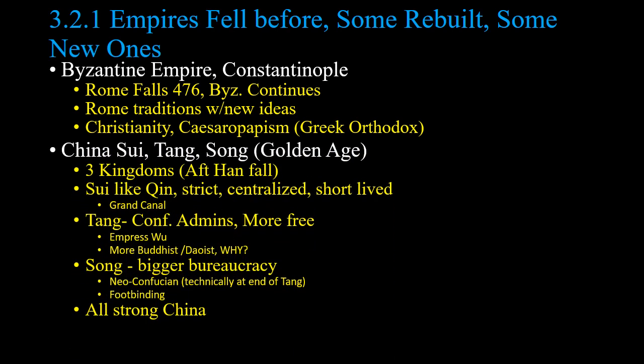China also rebuilds. After the Han Dynasty falls, you get smaller dynasties and the Three Kingdoms, then the Sui and Tang Dynasties take over. The Sui, like the Qin, are strict and short-lived but do grand infrastructure with the Grand Canal. The Tang Dynasty brings back Confucianism, especially Neo-Confucianism toward the end and throughout the Song Dynasty. The Tang has one of China's largest geographic extents and produces Empress Wu, who favored Buddhism and Taoism as they were less patriarchal. Toward the end of the Tang, foot binding begins, going strong by the Song Dynasty.